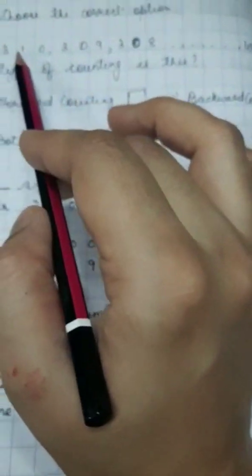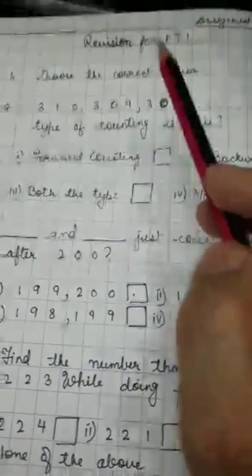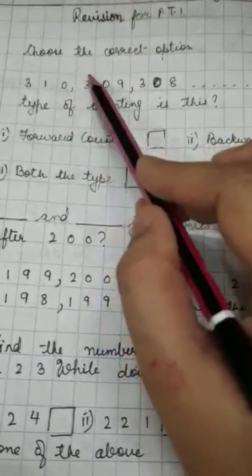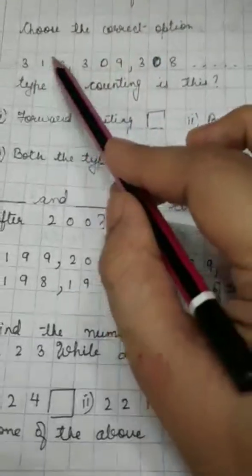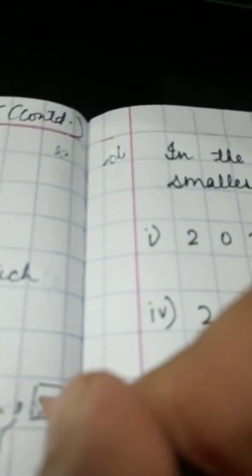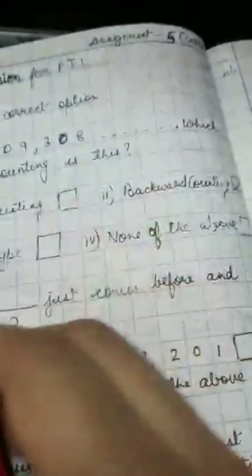Now, question number 1 is, 310, 309, 308. Which type of counting is this? Yes, children, see, what is happening here? One number is getting less. That means, we are moving backward, right? So, the correct option is backward counting and see, you will put a tick like this. You will write all the 4 options.